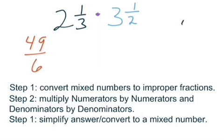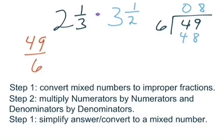So forty-nine, the numerator, goes inside the box. We're going to divide by six, the denominator. And let's try this out. Six does not go into four, but six goes into forty-nine, and I think it's eight times. Six times eight, I believe, is forty-eight.